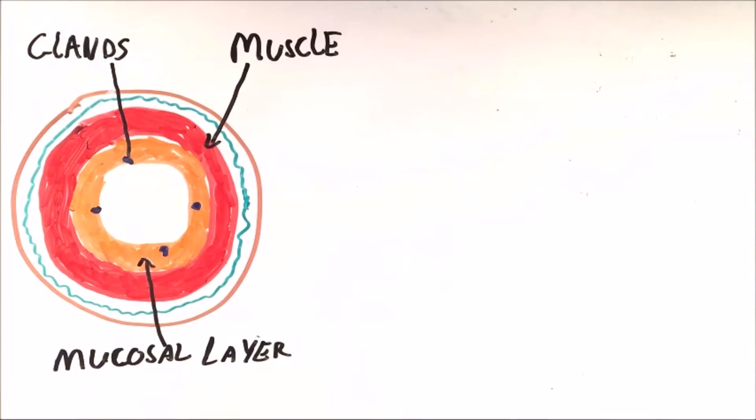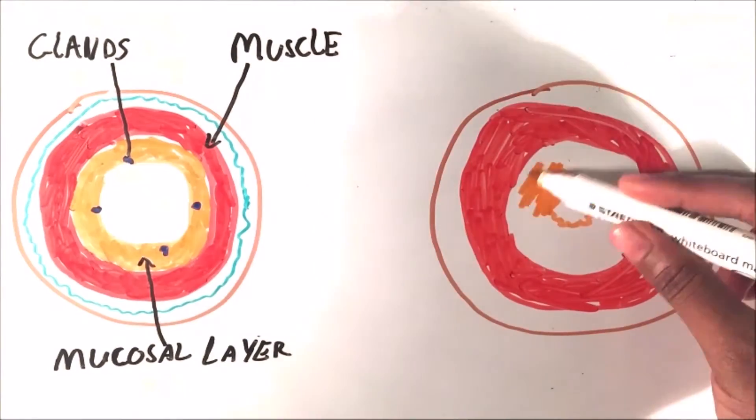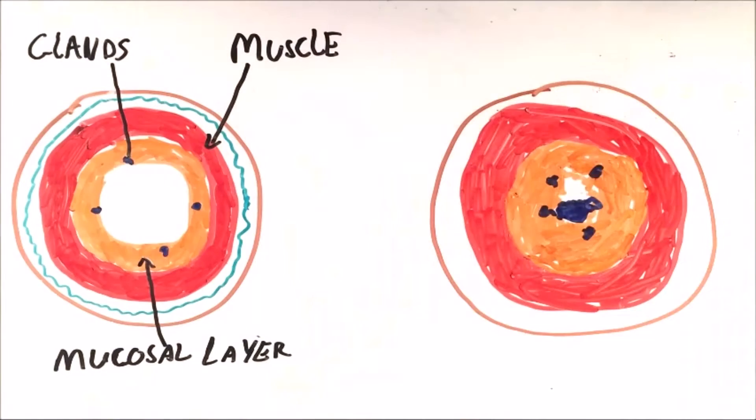When a person is having an attack, the smooth muscle contracts, making the lumen smaller, but the glands also secrete extra mucus. As you can see, the smooth muscle is contracted and the mucosal layer is now swollen. This means that the lumen is now a lot smaller than it should be, with the glands also secreting mucus. This is what gives the wheezing sound as air bubbles pop in the mucus. This is the picture of asthma.